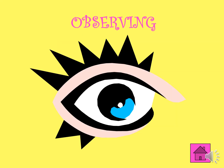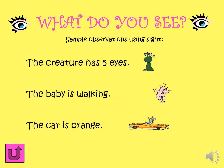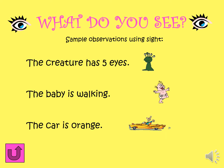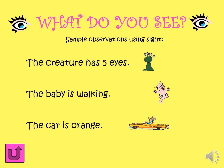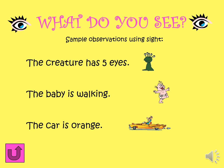Let's go to our eyes. We use our eyes to see. Here are some sample observations using our sight. The creature has five eyes. The baby is walking. The car is orange.